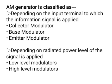In the collector modulator, the information signal is fed to the collector terminal of the transistor amplifier. In the base modulator, the information signal is fed to the base terminal of the transistor amplifier. In the emitter modulator, the information signal is fed to the emitter terminal of the transistor amplifier.